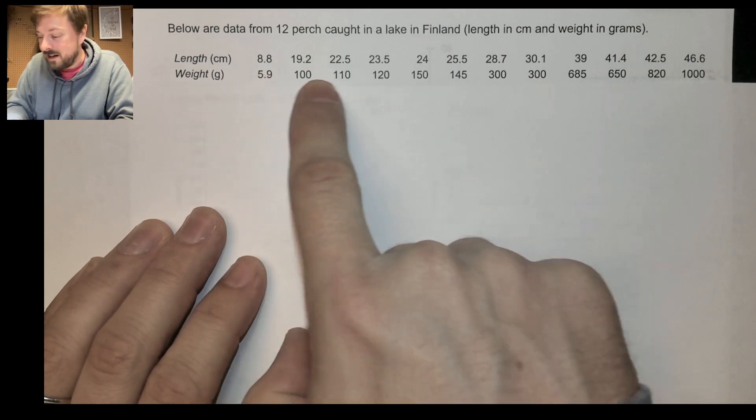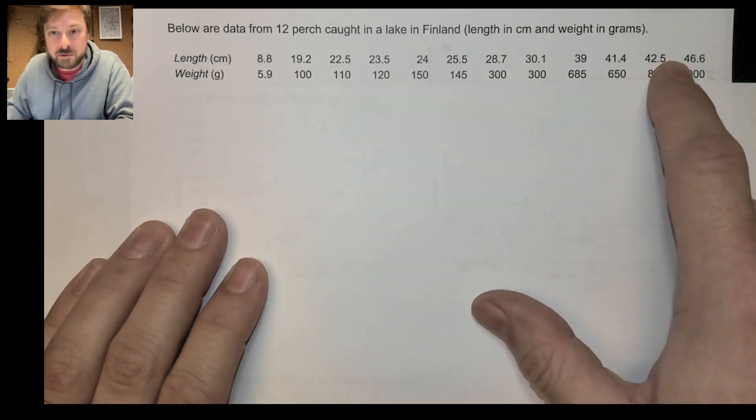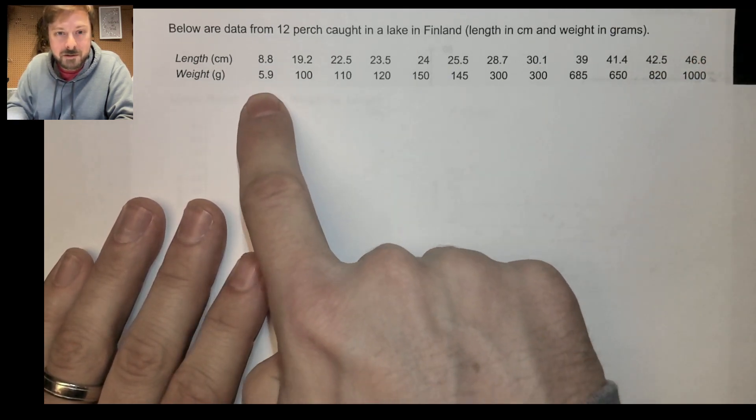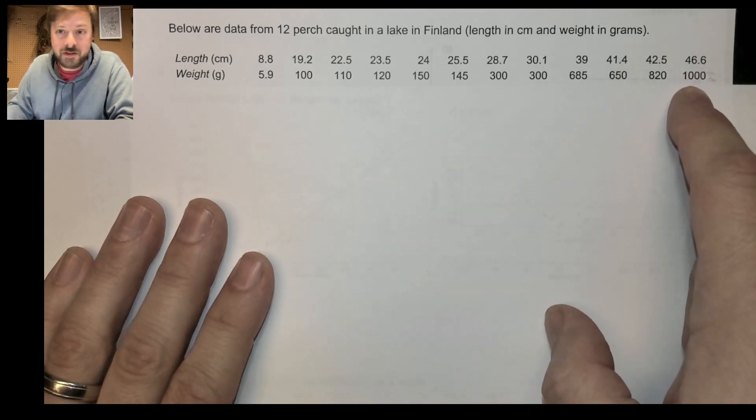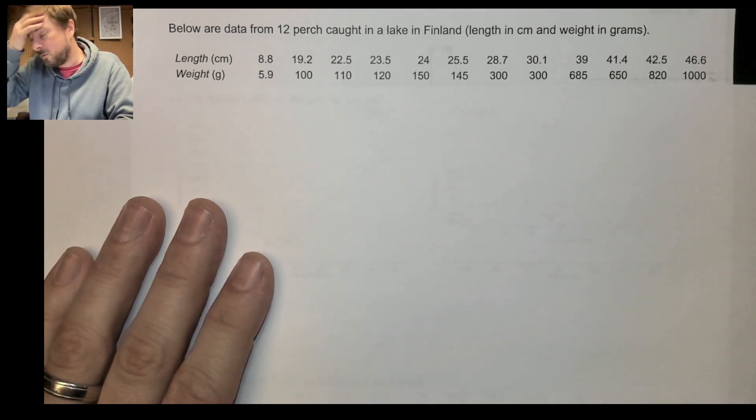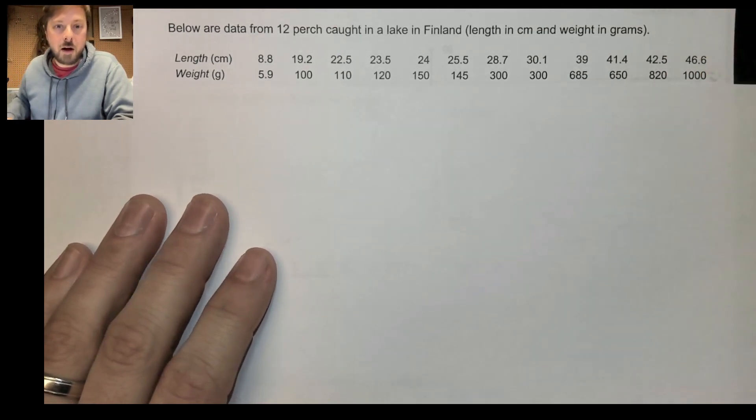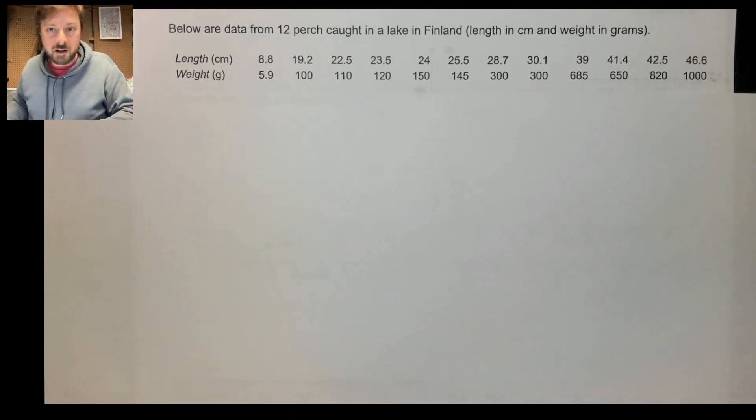Here we have the lengths in order from the tiniest little fish all the way up to the biggest, and then we have their weight in grams, from like a little tiny 5.9 gram fish all the way up to a kilogram, a thousand grams. And so what we're going to do is try to evaluate some different models to see what's the best model for predicting weight of a perch from the length.